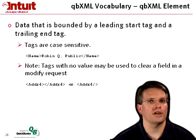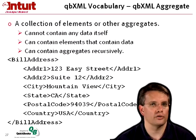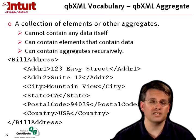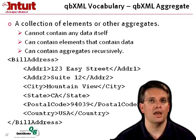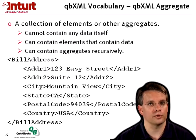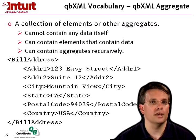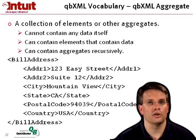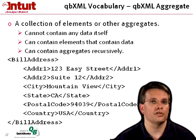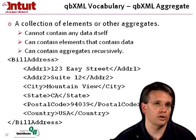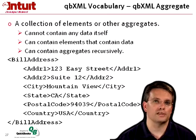Above elements, we have aggregates. An aggregate is a collection of elements or other aggregates — it doesn't contain any data itself, it simply contains elements that contain data. And it can contain aggregates recursively. A very simple aggregate you'll come across commonly is the bill address aggregate, which contains the addr1 through addr4 elements, the city, state, postal code, and country elements.